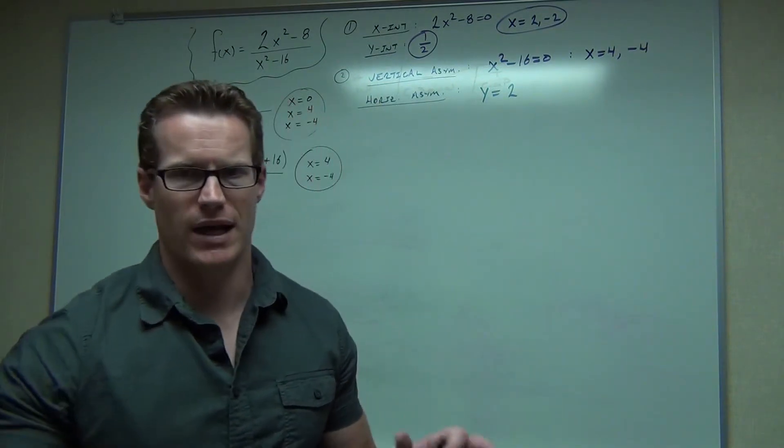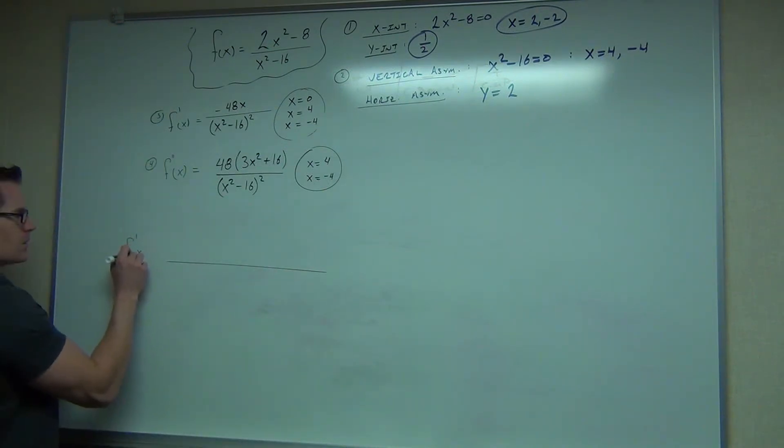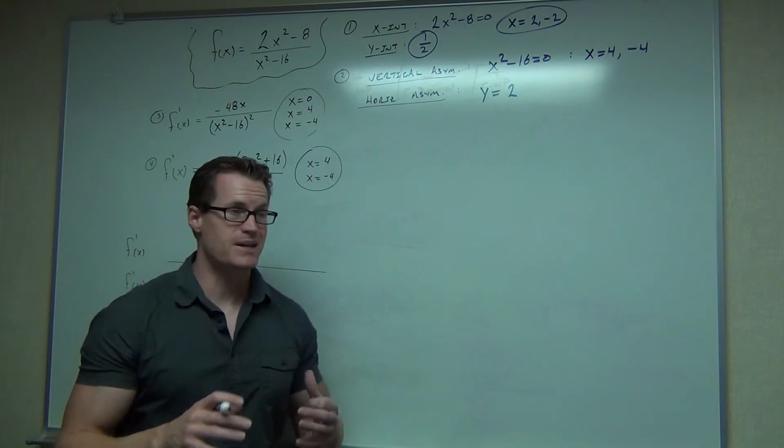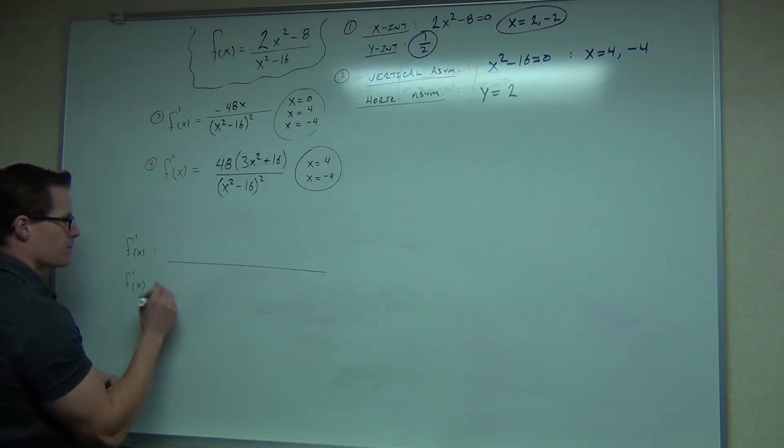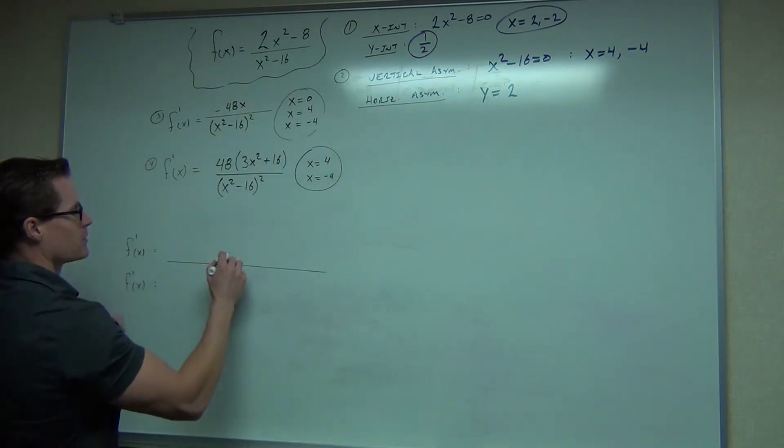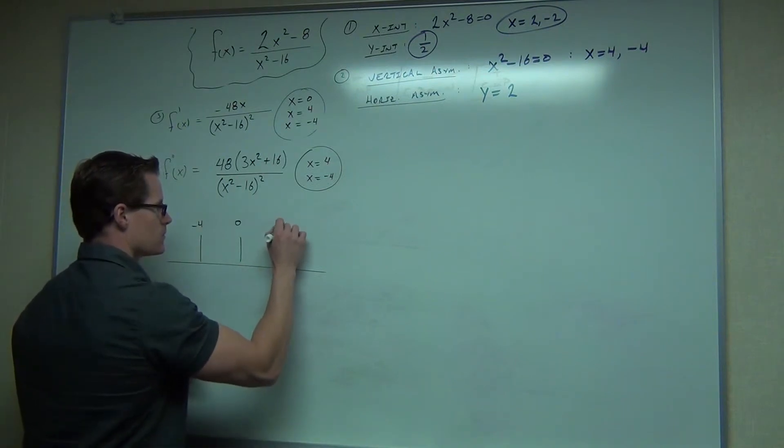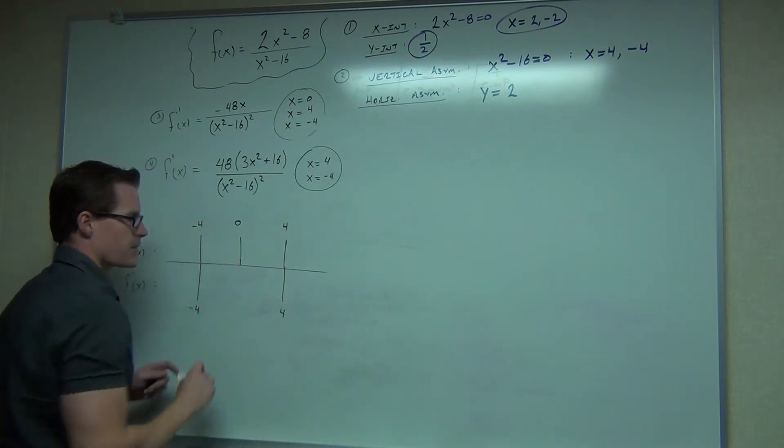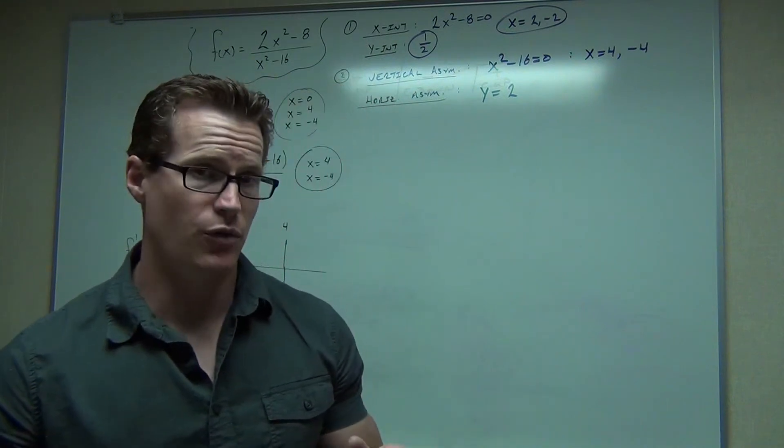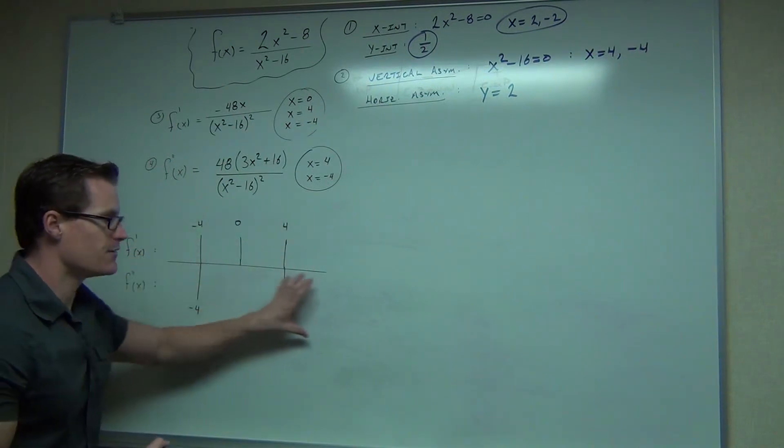Now, when we make the table, hopefully you remember this from class or from previous videos if you're watching this on video. We put our first derivative up top. Second derivative on the bottom basically gives us kind of a concise version of our graph, of our function on the graph. So we're going to put all of these points on the top. Got to be in order. And these points on the bottom.